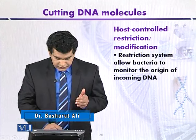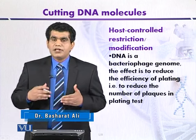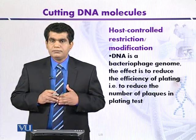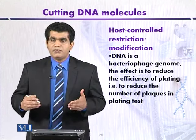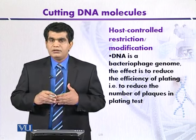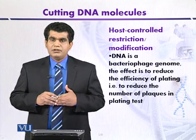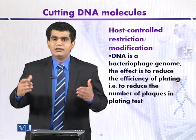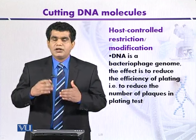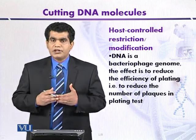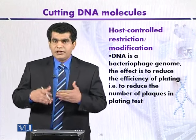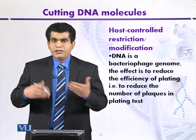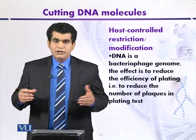Bacterial cells are colonized or attacked by different types of bacteriophages. In the lytic cycle, bacteriophages attack the bacterial cell, inject their DNA, take control of the host machinery, replicate, and cause cell lysis. However, this does not always occur because cells also contain restriction enzymes that can protect against lysis. Some bacteriophages, though, are able to replicate within the host bacterial cell as indicated by the lytic cycle.